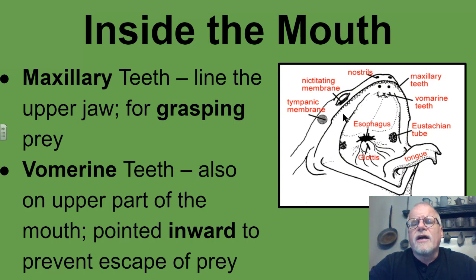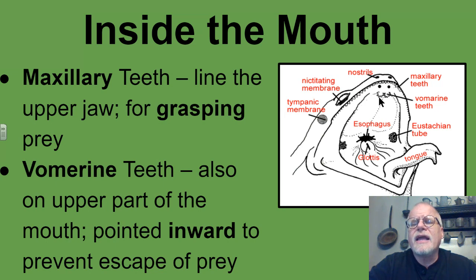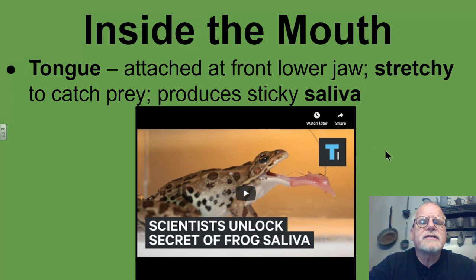If we take a look inside the mouth of the frog, you're going to see the maxillary teeth right here. Those would actually be difficult to see during a dissection, so what I would have you do is feel them, because they feel almost like sandpaper — they're very, very small. But they do have these two larger teeth called vomerine teeth, which are actually pointed inward to help prevent the escape of prey. They are quite pointy to the touch. Then if we take a look at the tongue, it is attached at the front lower jaw. It's stretchy to catch prey, and it actually produces a very sticky saliva.